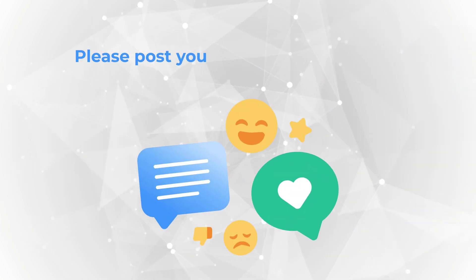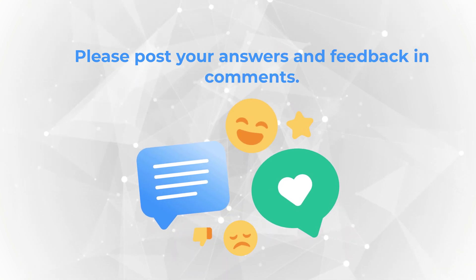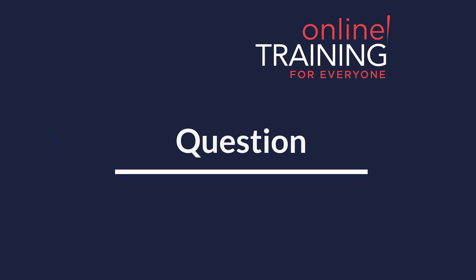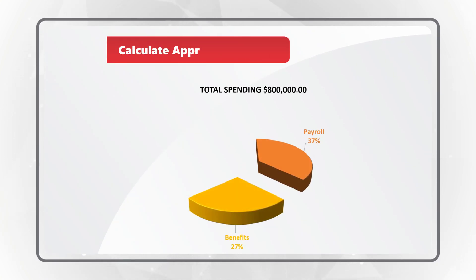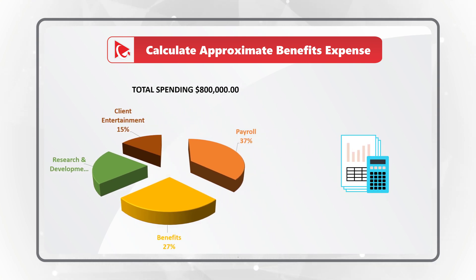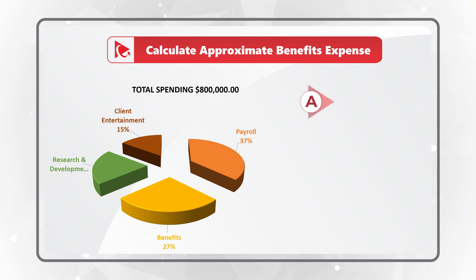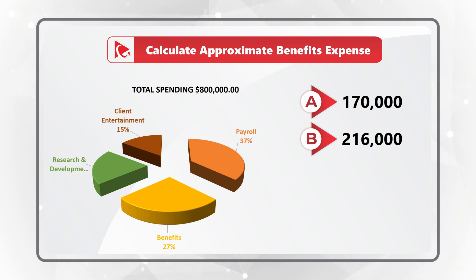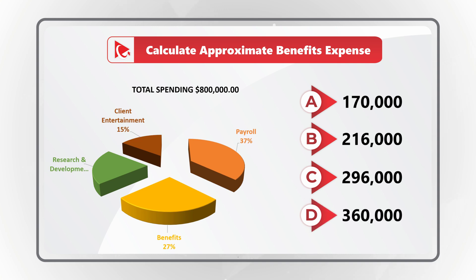Hopefully you've enjoyed this tricky question and now know how to answer similar problems on the test. Here's a practice question: you're presented with total company spending equal to $800,000, and you need to calculate an approximate benefits expense. In addition to benefits, the chart shows payroll, research and development, and client entertainment. The four choices are: A, $170,000; B, $216,000; C, $296,000; D, $360,000. Please pause this video, do mental calculations, and post your answer in comments.